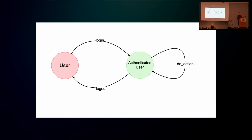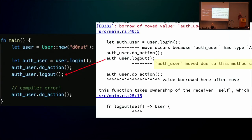So from User we call login, and that User object can no longer be touched — it becomes a compiler error if you interact with it again. We call login and state-transition into an AuthenticatedUser. We call doAction — that ampersand was present so the object isn't consumed, we can keep calling it. Then we call logout and get a state transition back into a different User object. We are building this state machine and getting enforcement benefits from the compiler. With our improper usage example, calling doAction after logout — which was permissible in Python — now gives us a compiler error.